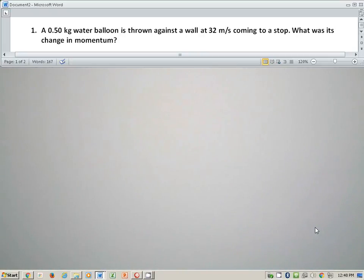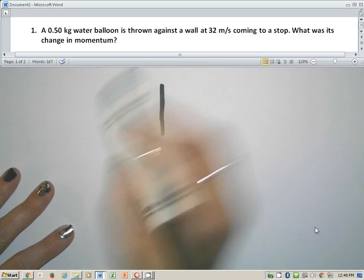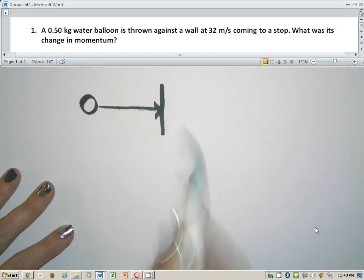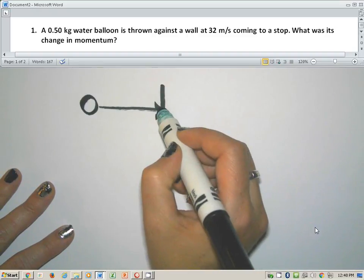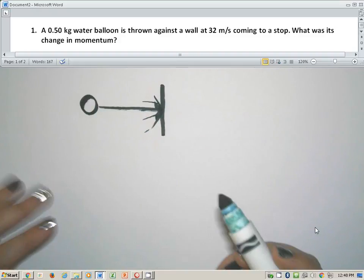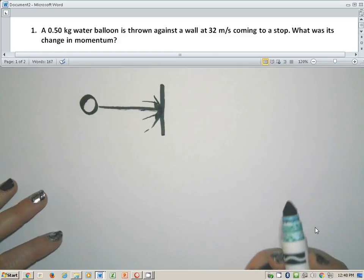So we have the problem up above about a water balloon. If you can imagine, we have a balloon that's being thrown at a wall. If you throw a water balloon at a wall, it's not going to bounce back at you. What's going to happen at the moment of impact is that balloon is going to explode and water is going to go everywhere. It's going to go splat. But there's still going to be a momentum change or the balloon would never have busted.